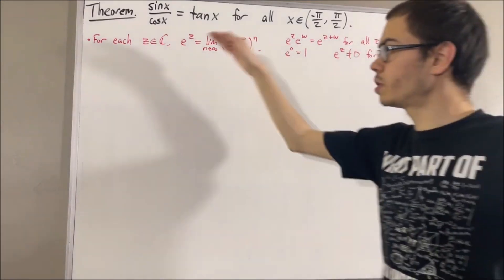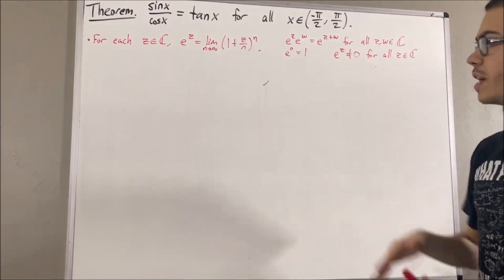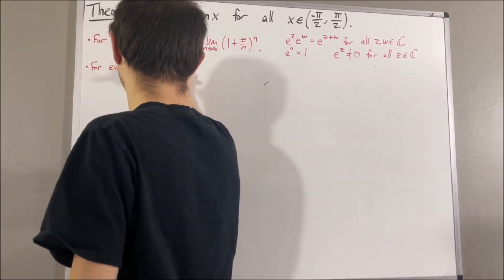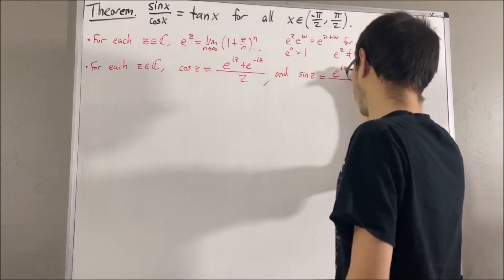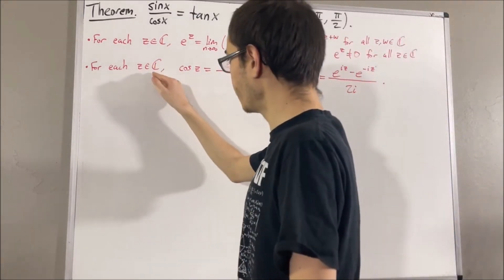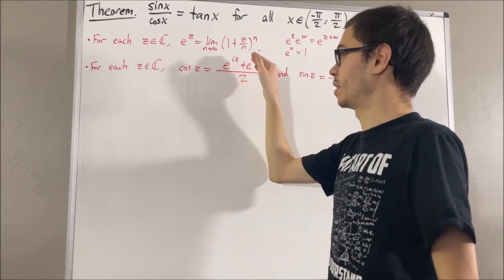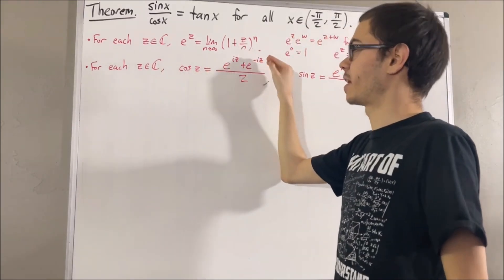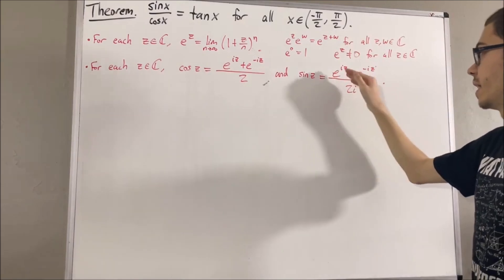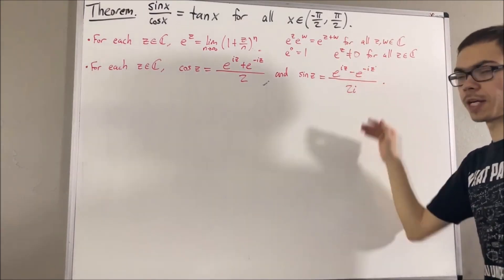Now, using the exponential function, we defined sine and cosine as follows. For each complex number z, we defined cosine of z to be e to the iz plus e to the negative iz over 2. And we defined sine of z to be e to the iz minus e to the negative iz over 2i.